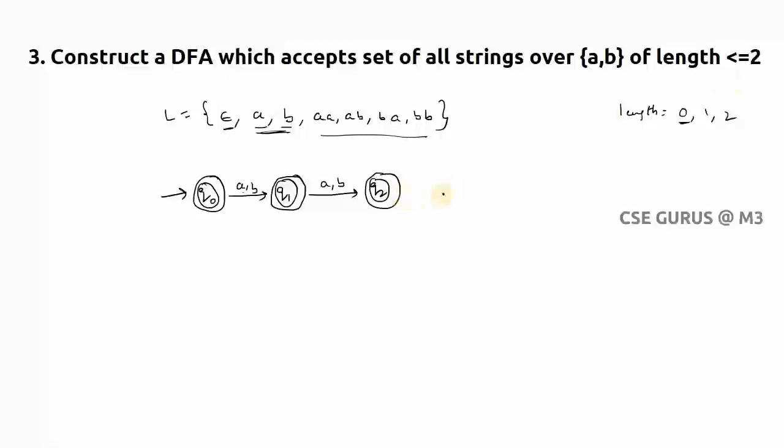You need to add one more here and make it as q3, and put a,b, and make that also a final state. Like this you need to do.